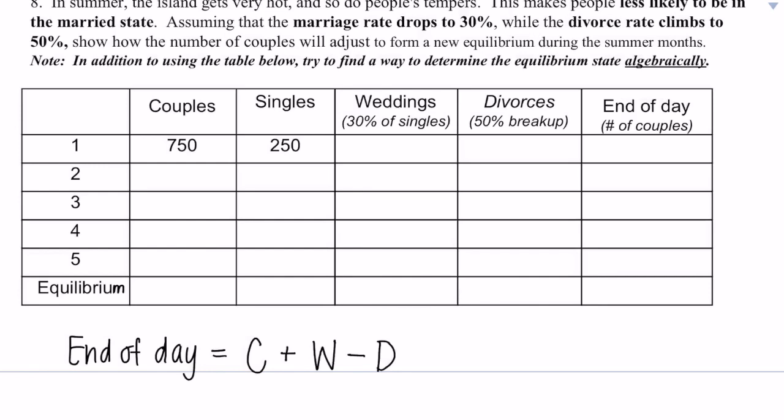in number three, the equilibrium ended up at 750 couples at the end of the day and the start of the day, and that was our equilibrium. So now we're going to see how the equilibrium changes with this change in rate of weddings and divorces. So in order to calculate the end of day number of couples, we're seeing the couples, original amount at the start of the day, plus the amount of weddings that day, minus the amount of divorces that day.